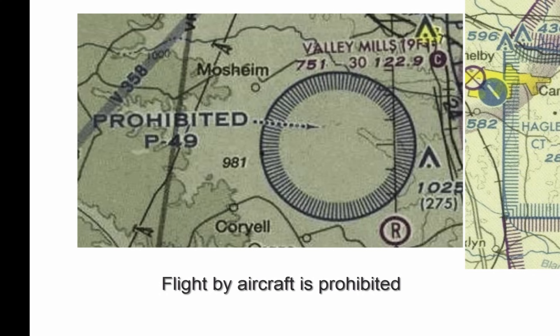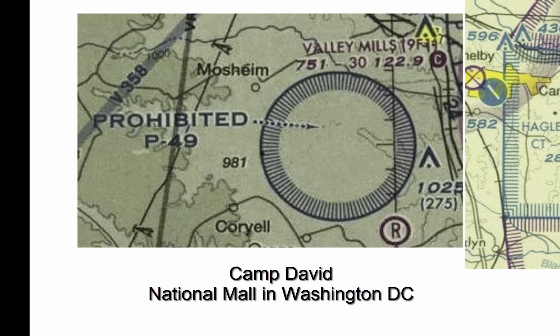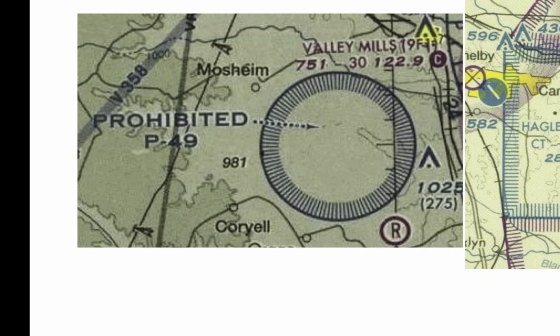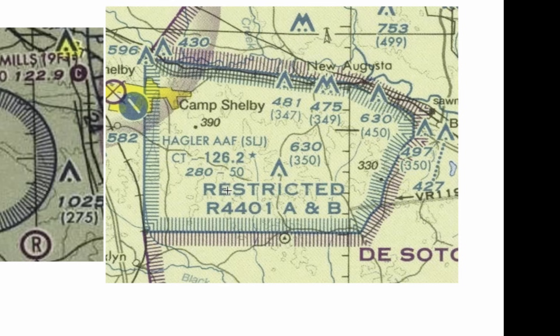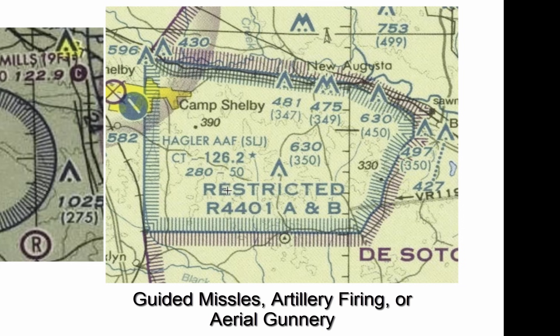Prohibited areas are areas where flight by aircraft is prohibited, and can be established for security or national welfare reasons. Some examples are Camp David or the National Mall in Washington, D.C. Restricted areas do not totally prohibit aircraft operation, but restrict aircraft when the area is in use. These areas often pose invisible hazards to pilots, such as guided missiles, artillery firing, or aerial gunnery. If the area is in use, ATC will make sure pilots avoid the area, but if not in use, aircraft are allowed to freely operate in the airspace.